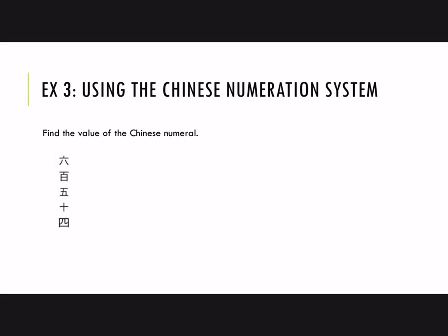So let's try it out, find the value of the Chinese numeral. First, let's record the value of each symbol, and I'm not even going to attempt to describe what these are. I'm just going to write the values. So the first one is a six, and then the next one is 100, and then we have a five, and then the symbol for ten, and then the symbol for four.